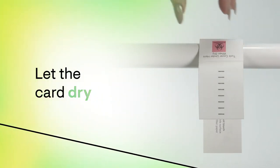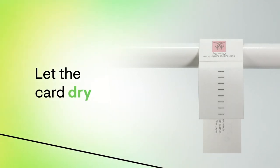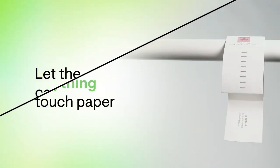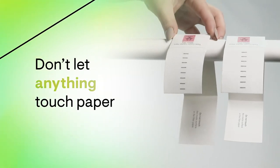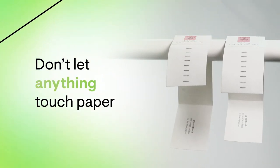The next step is to let the collection card dry. We suggest hanging or taping the card in a secure place, like a towel rack. Be careful not to let anything come in contact with the saturated section of the filter paper to ensure an accurate analysis of your sample.